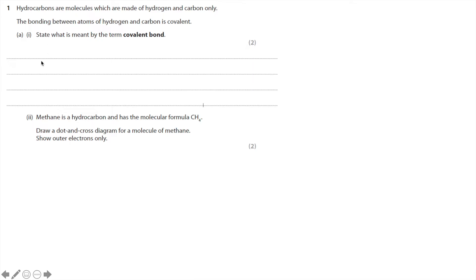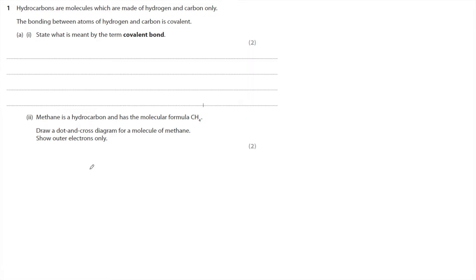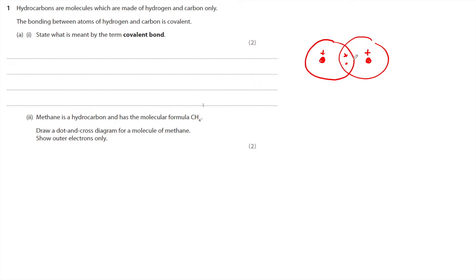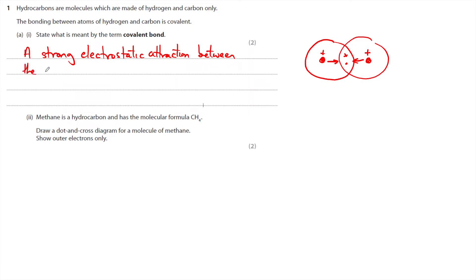In the first question we're asked to state what is meant by the term covalent bond. The covalent bond is made because in the middle you've got a shared pair of electrons, and it is a very strong electrostatic attraction between the shared pair of electrons in the middle and the positive nuclei of each atom, bringing those closer together. So a covalent bond is a strong electrostatic attraction between the negative shared pair of electrons and the positive nucleus.